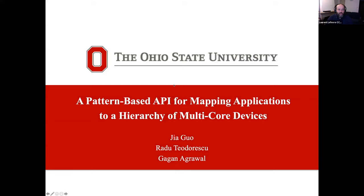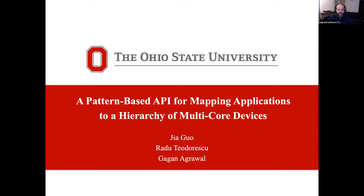A few words about Jia: he is a PhD candidate from the Ohio State University Department of Computer Science, working on parallel frameworks for data mining and machine learning applications. He also works on studying the impact of API design on middleware performance.